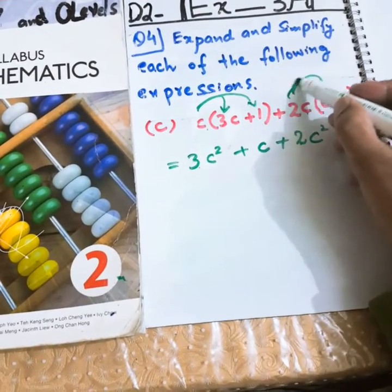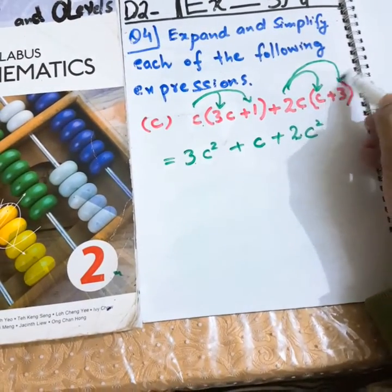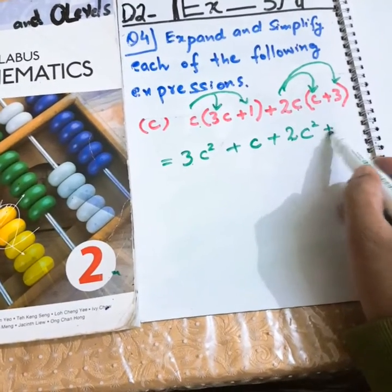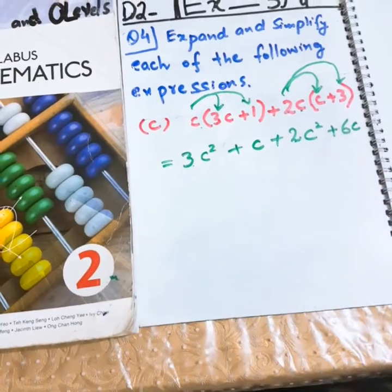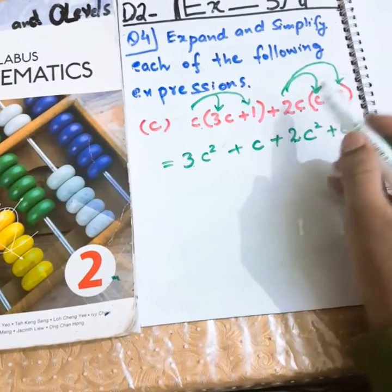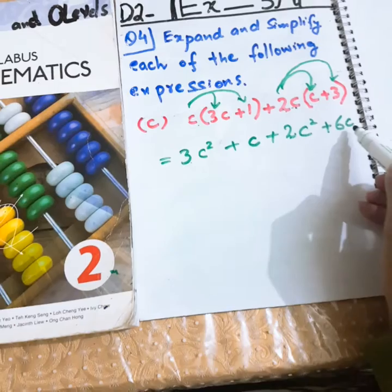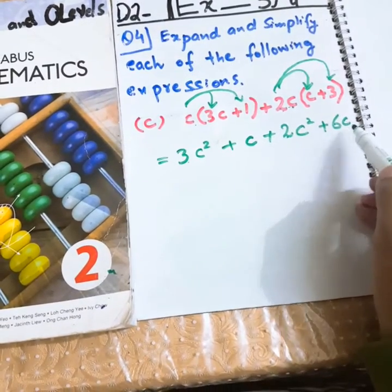Now, 2 will be multiplied by this 3. 2, 3 times 6. And C was here. So, C will also come here. So, what I have done? 2C will be multiplied by 3. And we shall have 2, 3 times 6C.